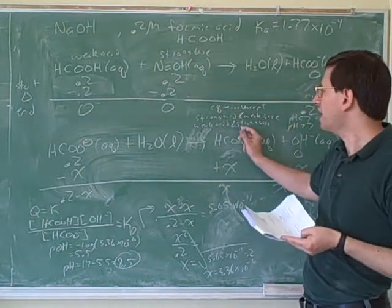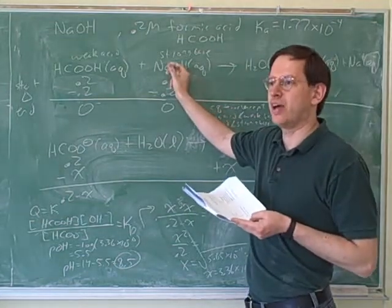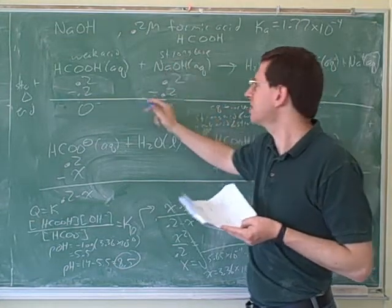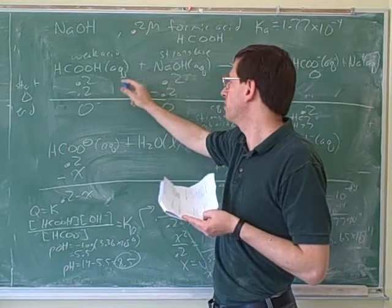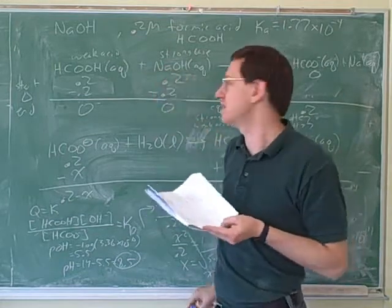Now, this case here, a weak acid and a strong base, that's what we just did, right? That was our formic acid example here, a weak acid and a strong base, and we went to the equivalence point. So let's see what happened to the pH.